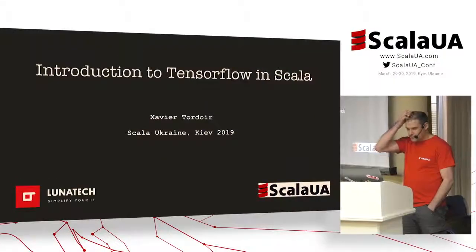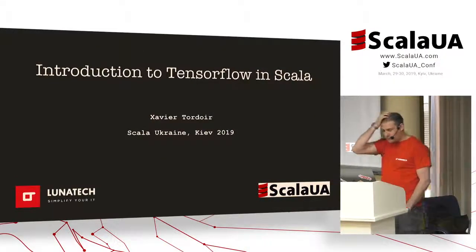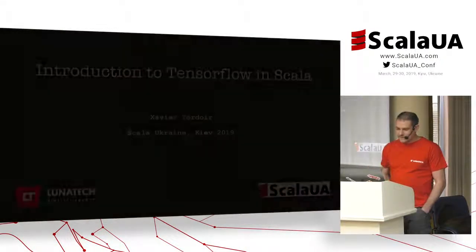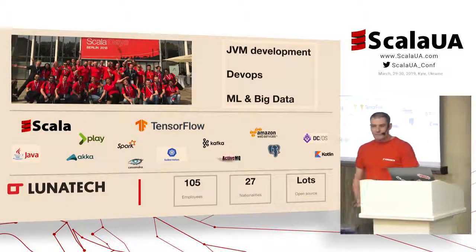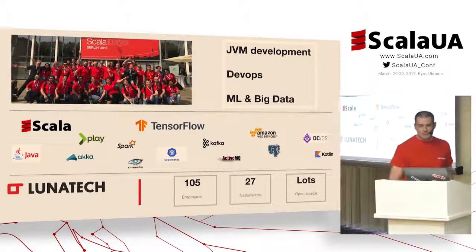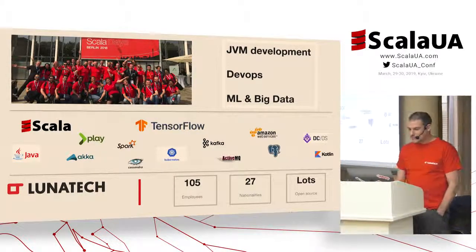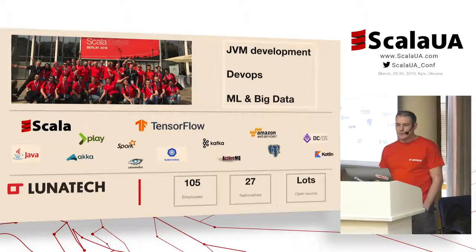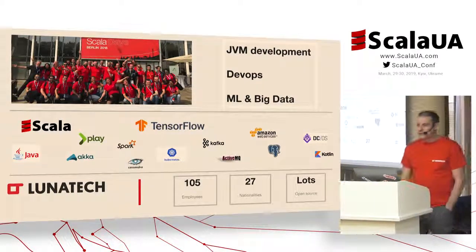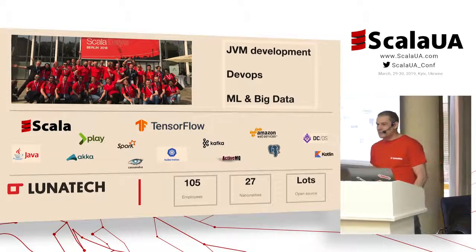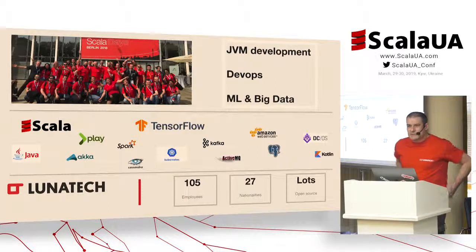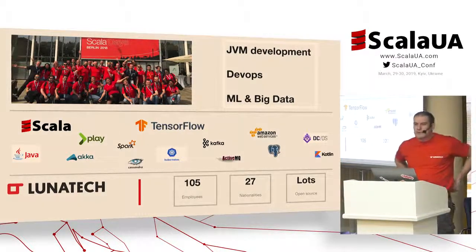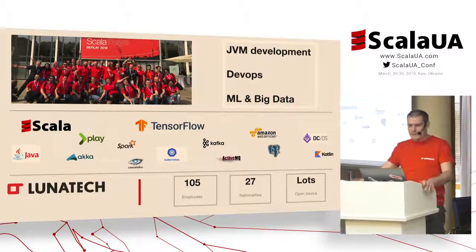A few words about me and where I come from. I'm currently working with Lunatec, a company based in Rotterdam, the Netherlands, and Paris, France. We do JVM development for enterprise, shipping teams into large projects. We also have DevOps teams, and I'm working on the big data and machine learning side of these projects.